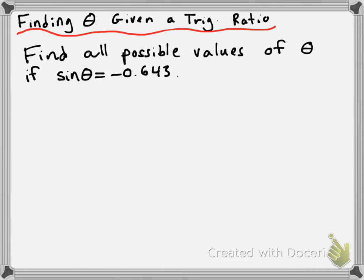So we don't know what theta is right now, but we do know that the sine of theta is negative 0.643. And again, we're looking for all possible values of theta. So the first step that we need to do here is we need to basically take the sine inverse. So in this case, we're going to have theta is equal to the sine inverse of negative 0.643.